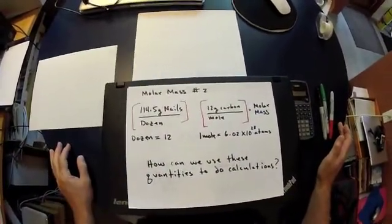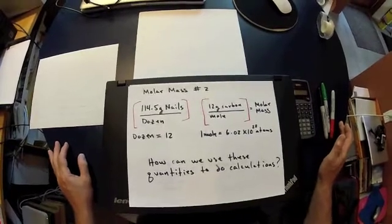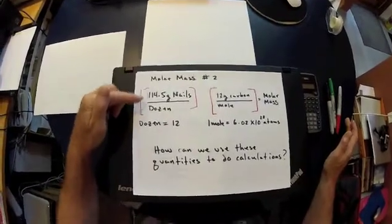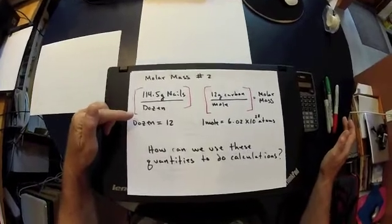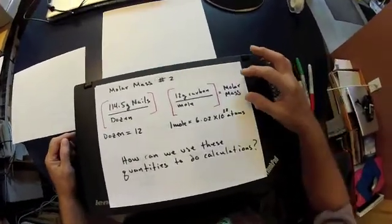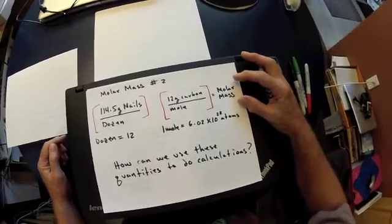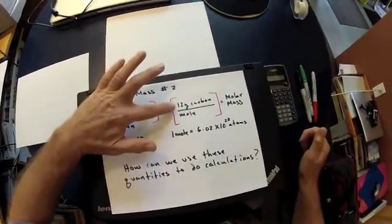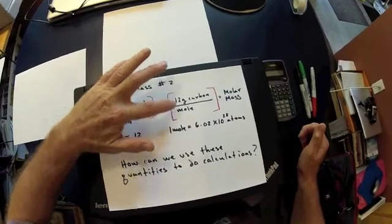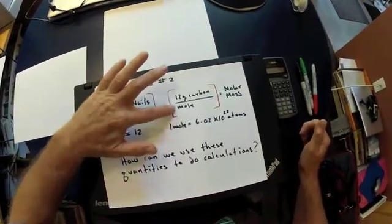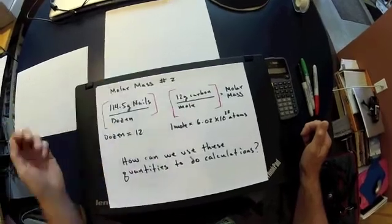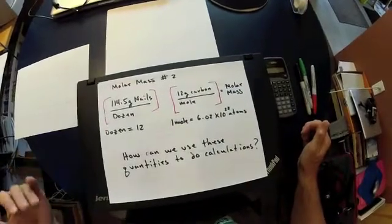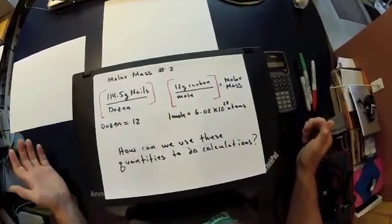To reiterate what we learned the other day: a dozen 16-penny nails has a mass of 114.5 grams, and we use that in a ratio to do calculations. Similarly, the molar mass of carbon is 12 grams per mole. The tricky part is realizing you can think of the mole like a dozen — everybody knows a dozen is 12.